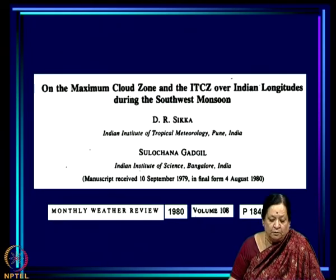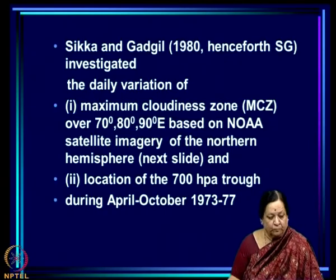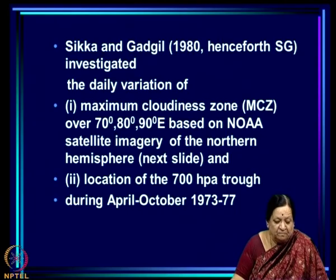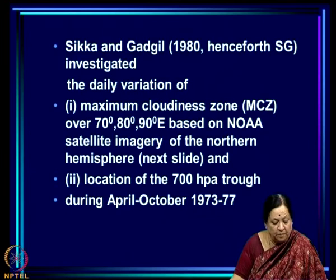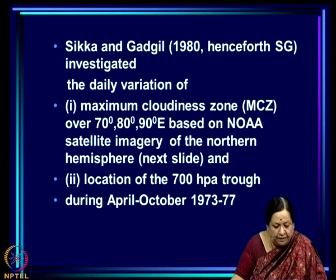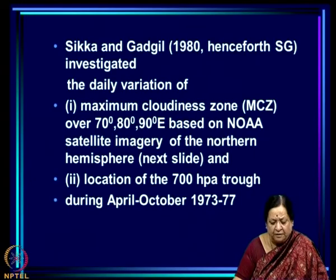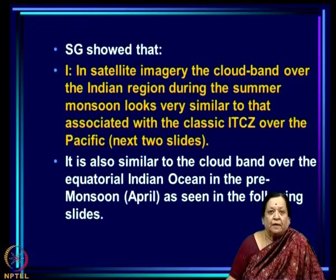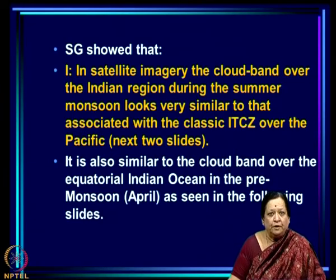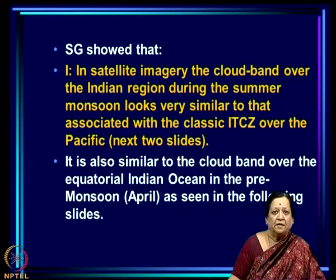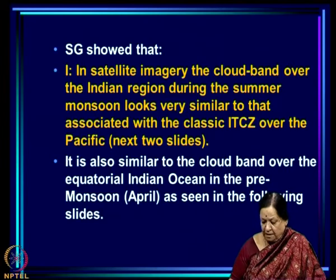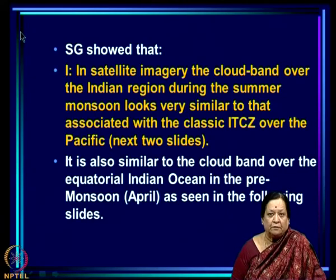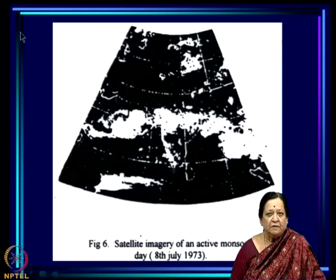This was the first systematic study of satellite imagery. Sikha and Gargiil — referred to as SG or HG — investigated the daily variation of what they called the Maximum Cloudiness Zone, over 70, 80, and 90 degrees east, based on NOAA satellite imagery of the Northern Hemisphere, and also the location of the 700 millibar equatorial trough. SG showed that in satellite imagery, the cloud band over the Indian region during the summer monsoon looks very similar to that associated with the classic ITCZ over the Pacific, and also similar to the cloud band over the equatorial Indian Ocean in the pre-monsoon (April).